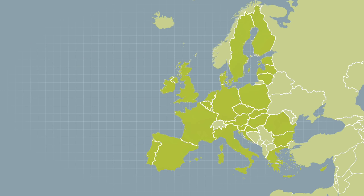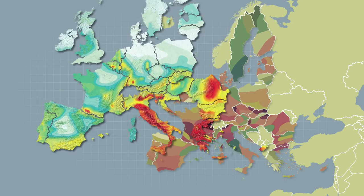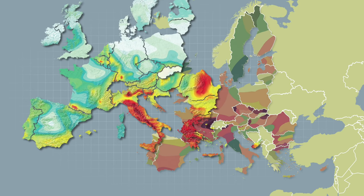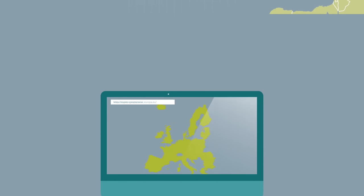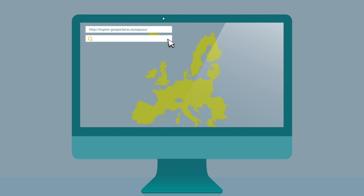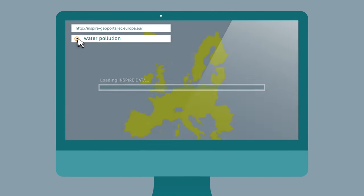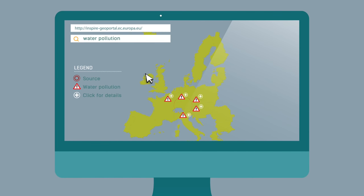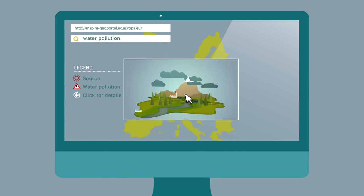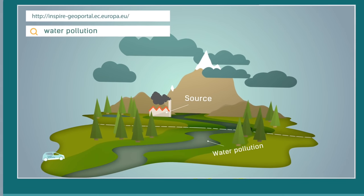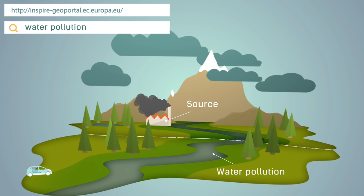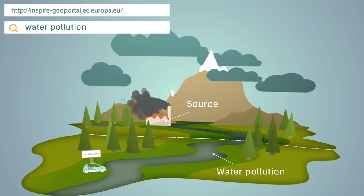In some cases, information is collected for the first time, and the INSPIRE standards help to do this in an efficient way. INSPIRE allows spatial data from different countries to be found, shared and used more easily. Information is available through an online portal. Users can be confident that the data they get can be readily combined and integrated, and public authorities will be able to take more informed decisions at the right time.